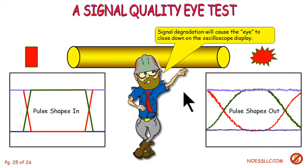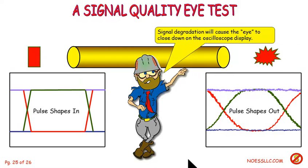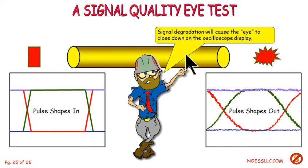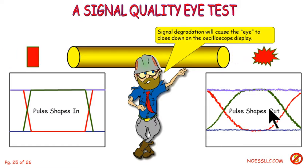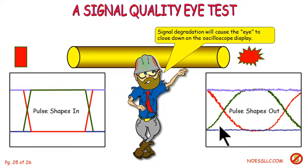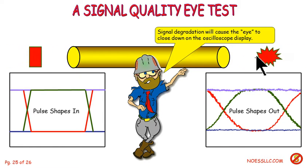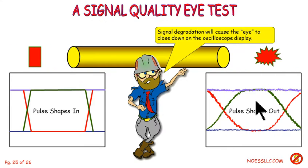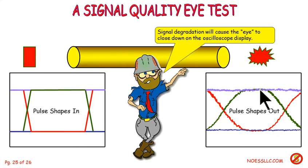When the eye starts closing down, it indicates something is wrong with your transmission facility. If you hear anybody talk about eye patterns and you think it has something specifically to do with optics — not true. This eye pattern is just what the whole bunch of pulses look like coming out of the electronic side after they're turned back into electronics. This eye closes down, you've got problems: it was nice and open on the transmit side, but messed up on the receive side — something's wrong in your transmission system.